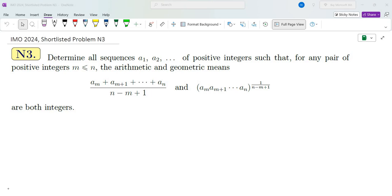Hello, my name is Dr. Abrahamian and in this channel I go over problem-solving strategies primarily in math competition. So here is a problem from IMO 2024. This is shortlisted problem N3. Determine all sequences A1, A2, etc. of positive integers such that for any pair of integers M less than or equal to N, the arithmetic mean and geometric means of AM through AN are both integers.